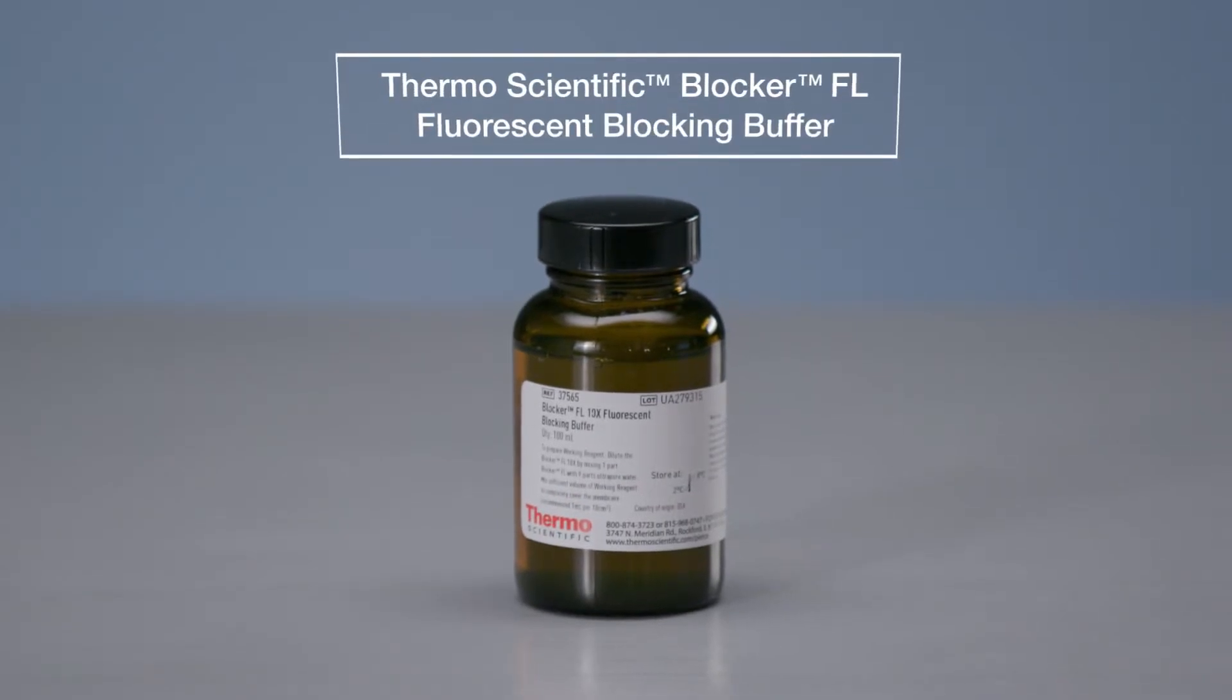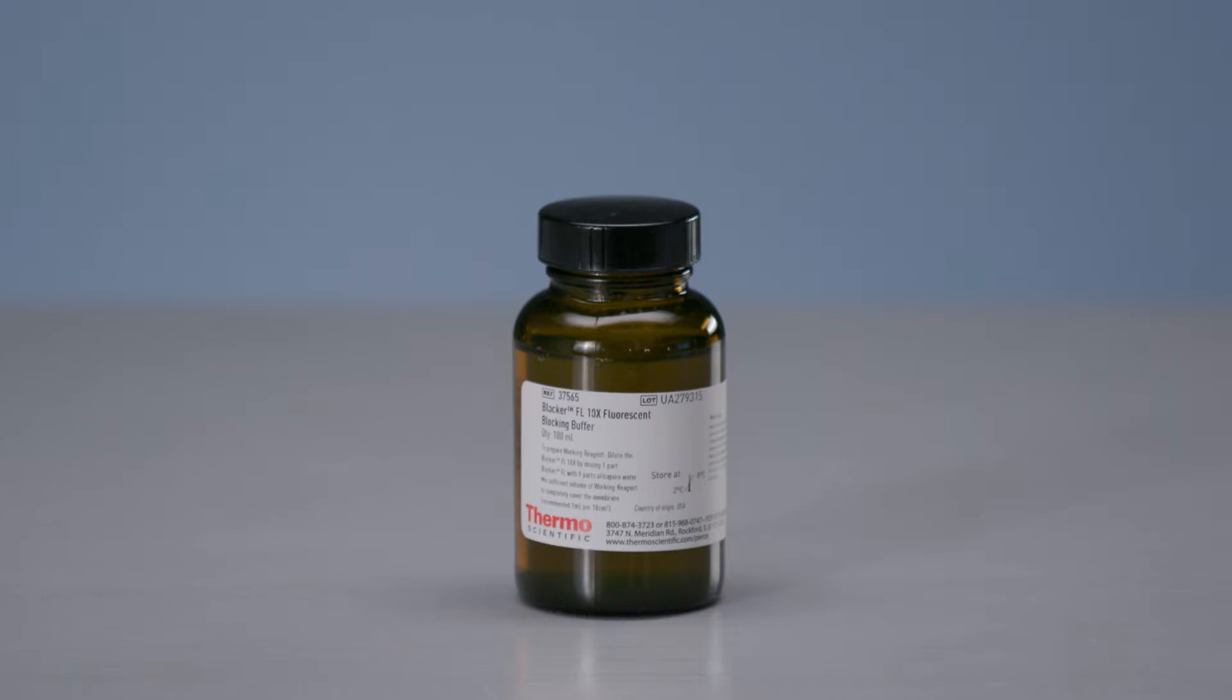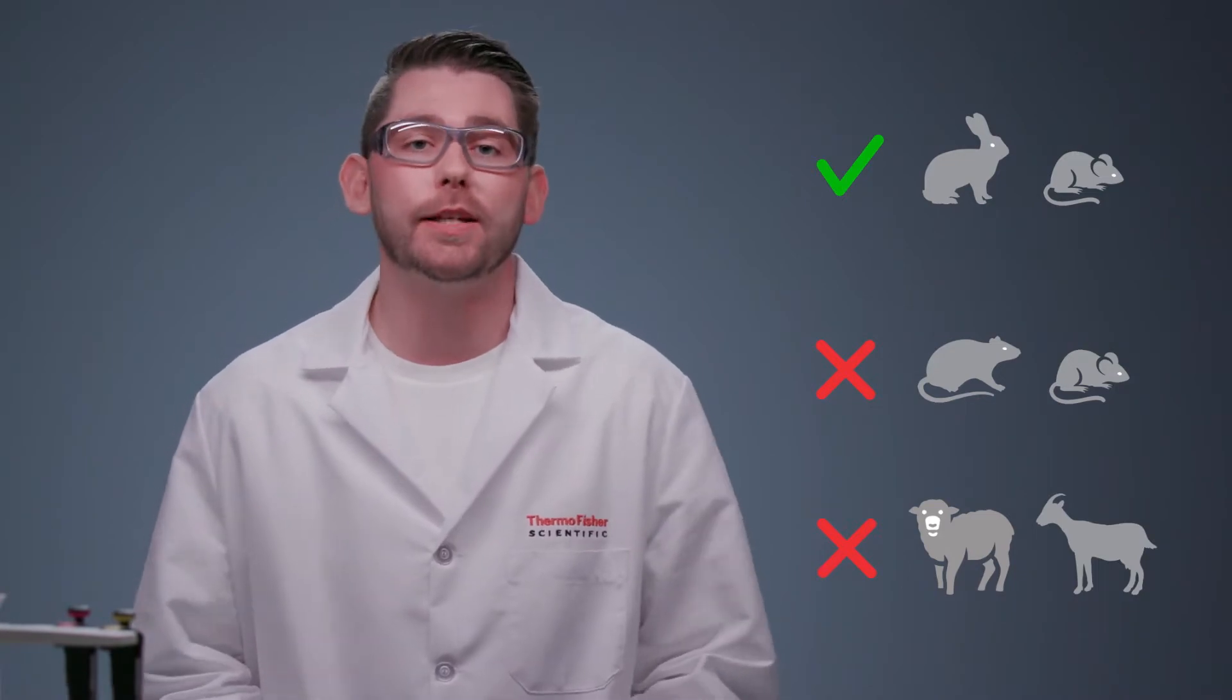Use only detergent-free blocking buffers as common detergents autofluoresce and will increase background. The selection of appropriate primary antibodies and fluorescently labeled secondary antibodies is critical when designing a fluorescent western blot experiment. For example, when performing two-plex multiplexing experiments, use primary antibodies from different host species to avoid cross-reactivity. Ideally, use a combination of antibodies from two distantly related species, such as mouse and rabbit, avoiding combinations like mouse and rat, or goat and sheep.